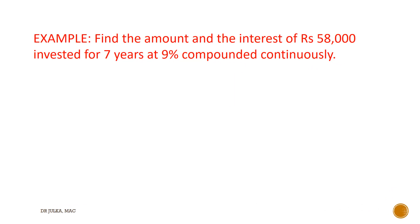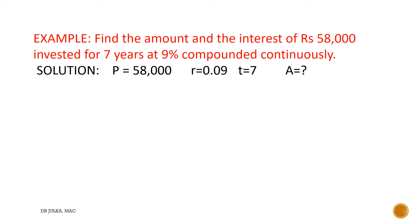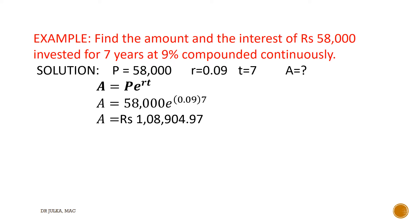One more example: find amount and interest if ₹58,000 is invested for 7 years at 9% rate of interest compounded continuously. Here P equals ₹58,000, R equals 0.09, and T equals 7 years. We know that when interest is compounded continuously, amount equals P multiplied by E raised to the power RT. Putting P equals 58,000, R equals 0.09, and T equals 7, using a simple calculator we get the amount of ₹1 lakh 8,904.97. Total interest is amount minus principal: ₹1,08,904.97 minus ₹58,000, giving total interest of ₹60,904.97.